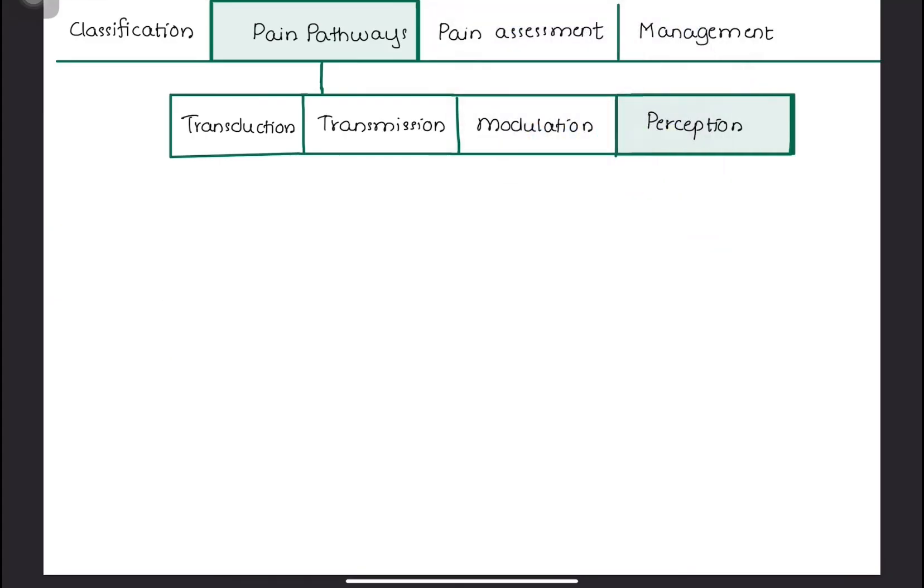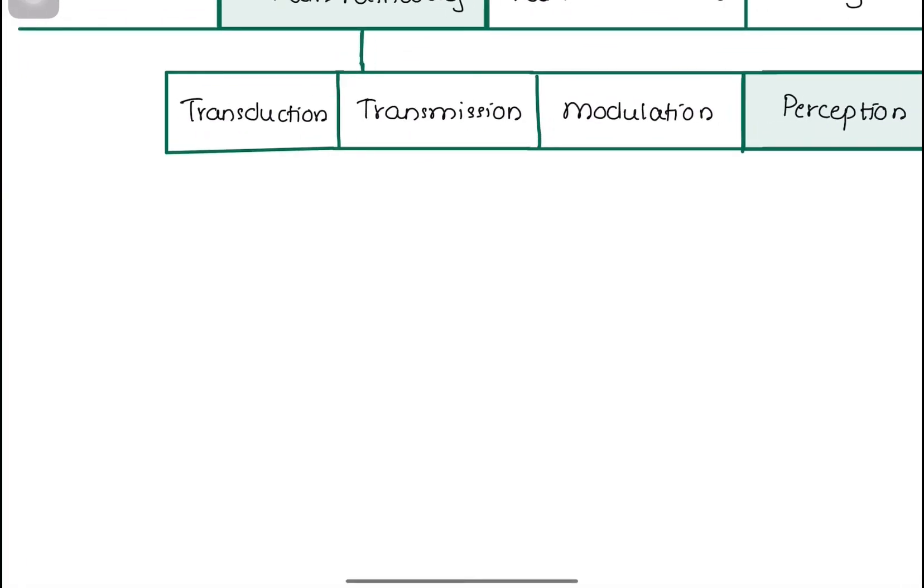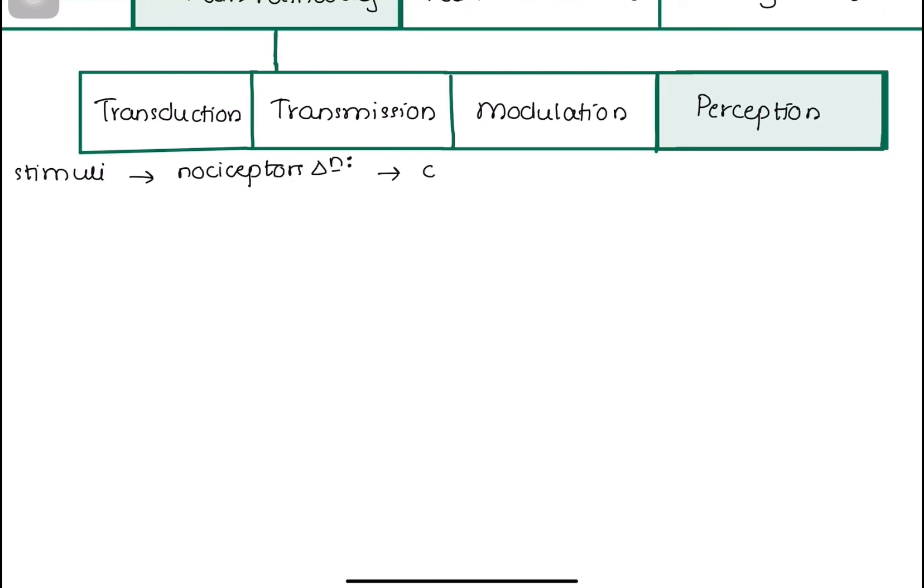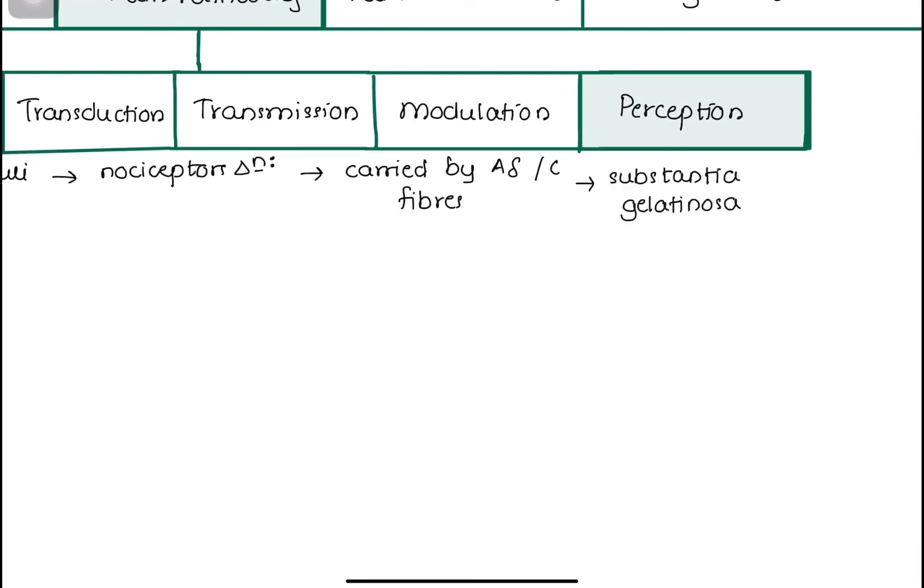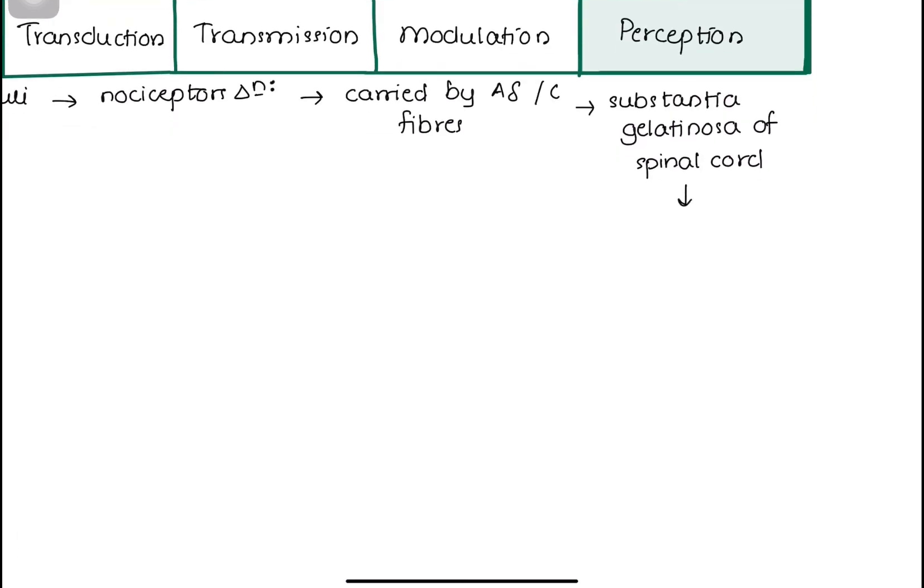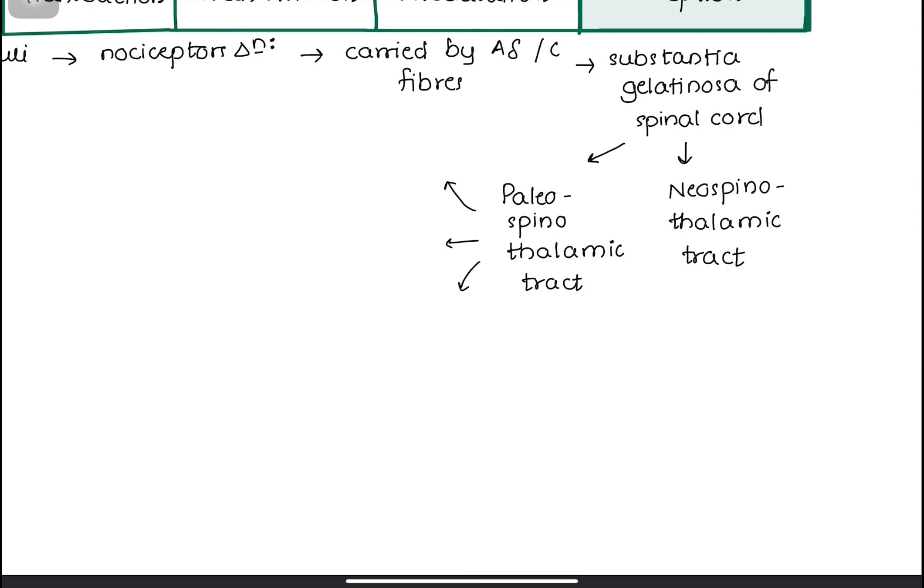Now let's take a brief recap about what we have learned so far. Our body has pain receptors called nociceptors which are activated through various noxious stimuli. This noxious stimulus is transduced into electrical signals carried by A-delta and C fibers of the primary neuron. It reaches the substantia gelatinosa of the spinal cord and from which it separates into two pathways, namely paleospinothalamic tract and neospinothalamic tract. Paleospinothalamic tract also gives branches to three areas: hypothalamus, midbrain, and medulla. The remaining fibers ascend to the thalamus, then relay the signals to certain portions of the brain like somatosensory cortex and cingulate gyrus.